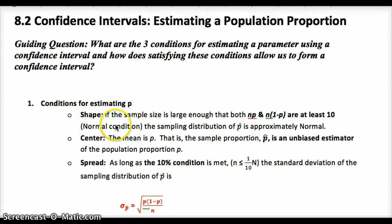Conditions for estimating shape: the sample size n times the proportion and the sample size times 1 minus the proportion are at least 10, so that we know our distribution of p-hat, our sampling distribution, is approximately normal. Center: the mean is p, so the sample proportion p-hat is an unbiased estimator, meaning random assignment and having a good unbiased experiment to create data that is unbiased.